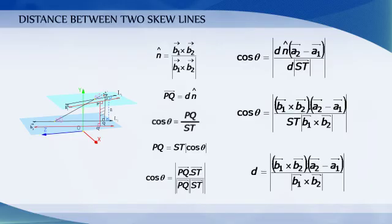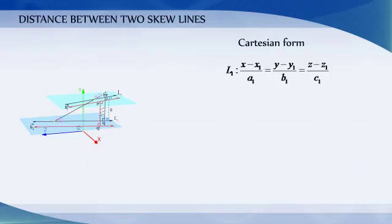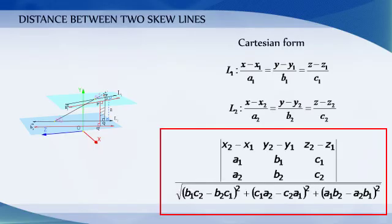When the lines are given in Cartesian form, the shortest distance between them is modulus of determinant of x2 minus x1, y2 minus y1, z2 minus z1, a1 b1 c1, a2 b2 c2, divided by square root of (b1 c2 minus b2 c1) whole square plus (c1 a2 minus c2 a1) whole square plus (a1 b2 minus a2 b1) whole square.